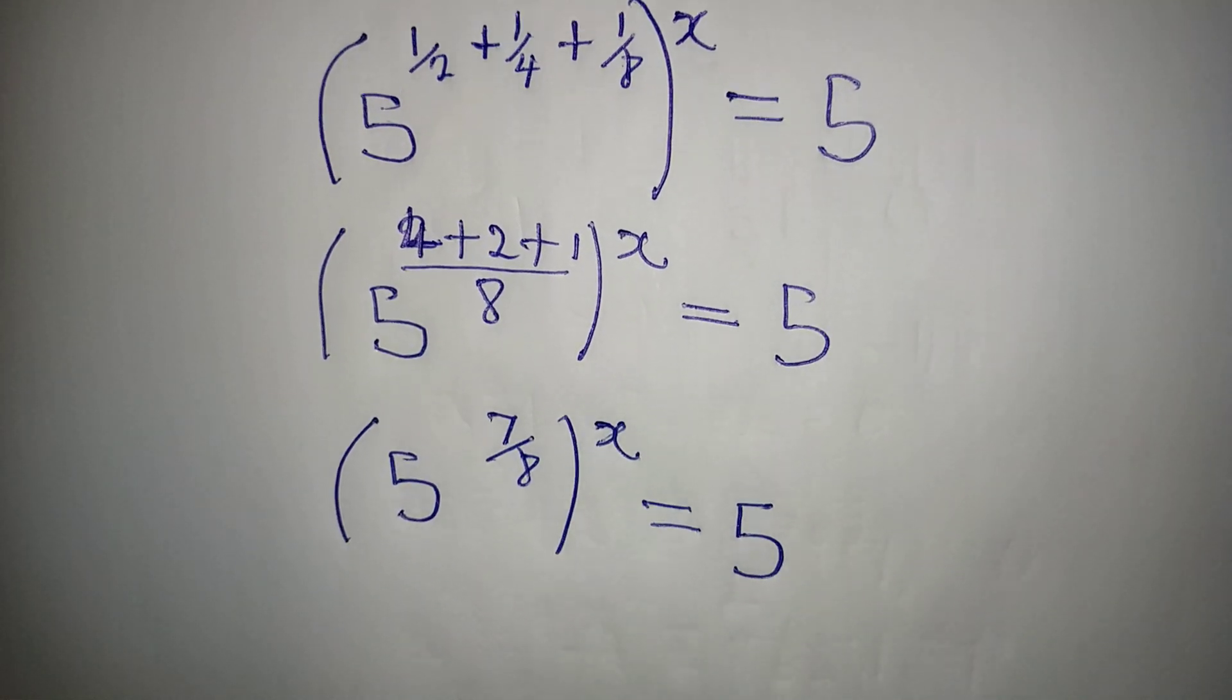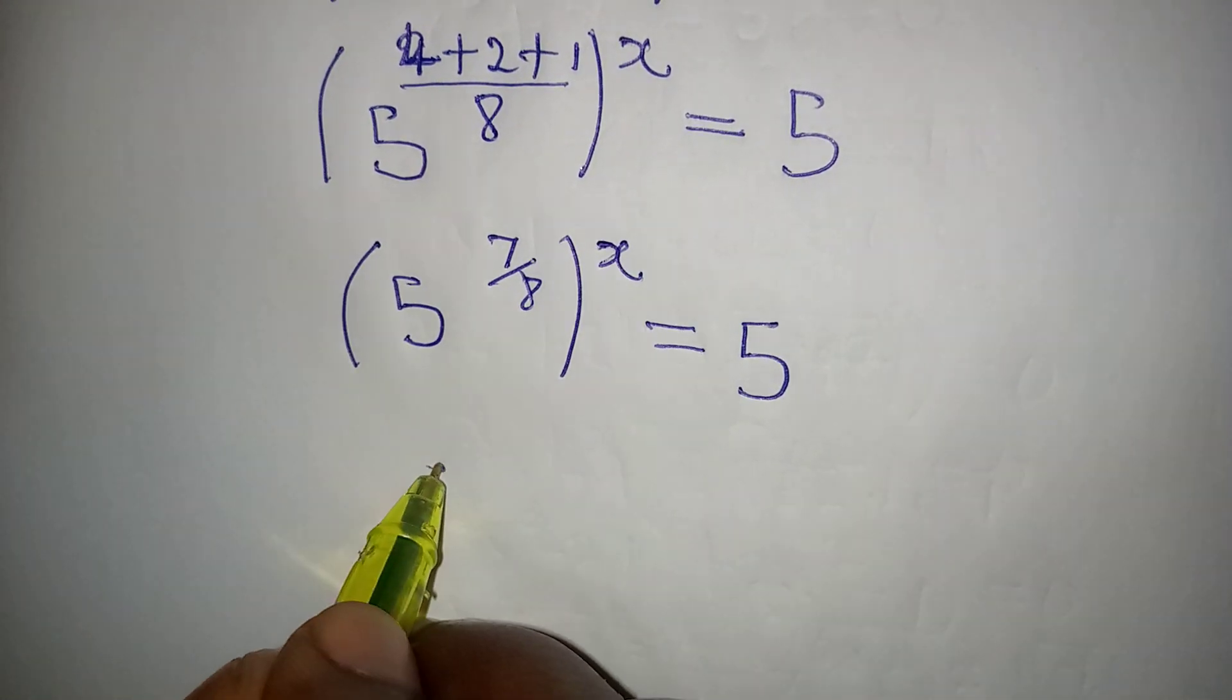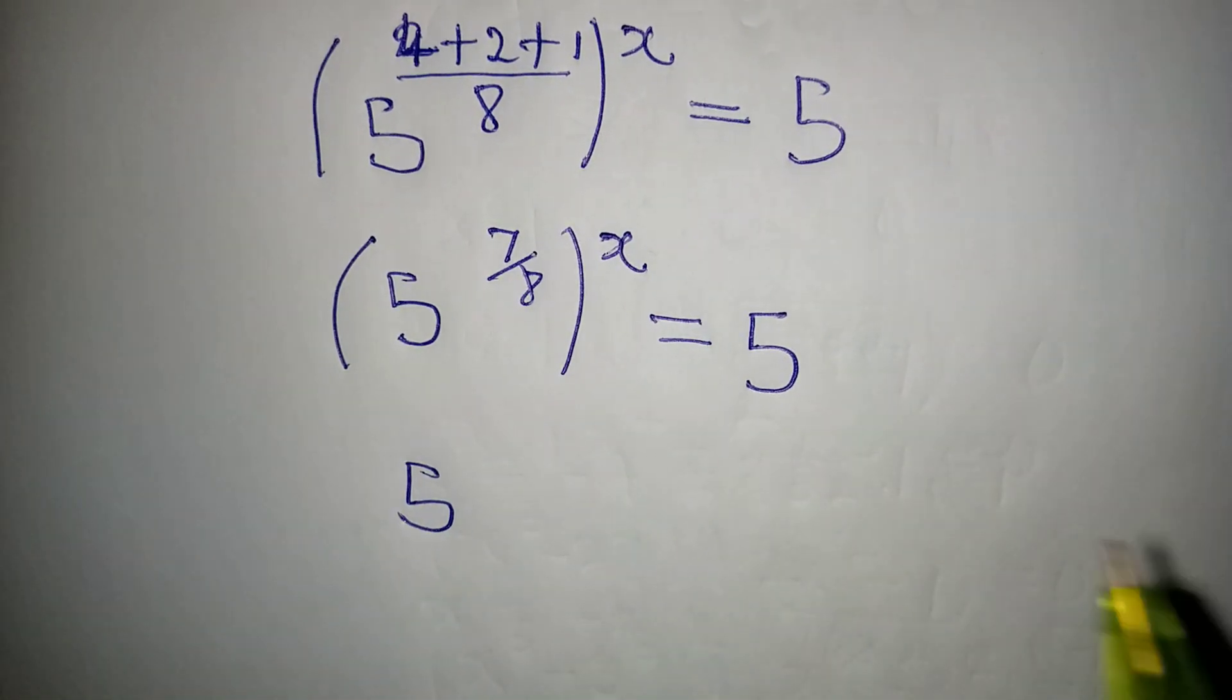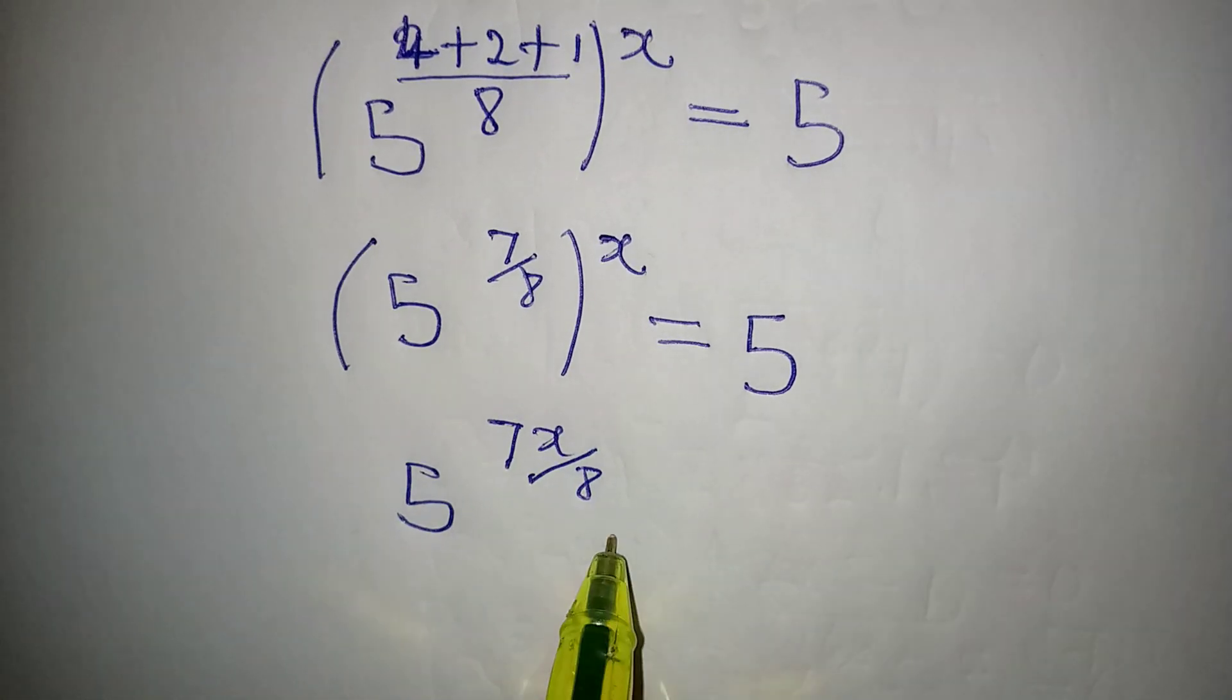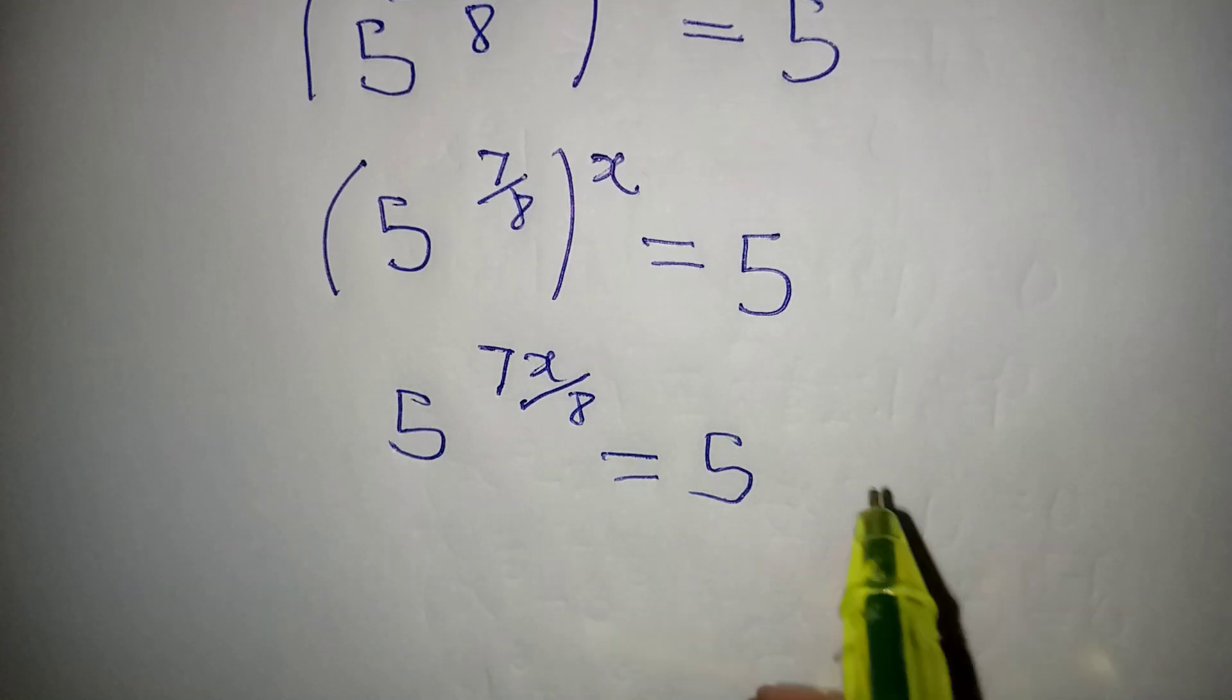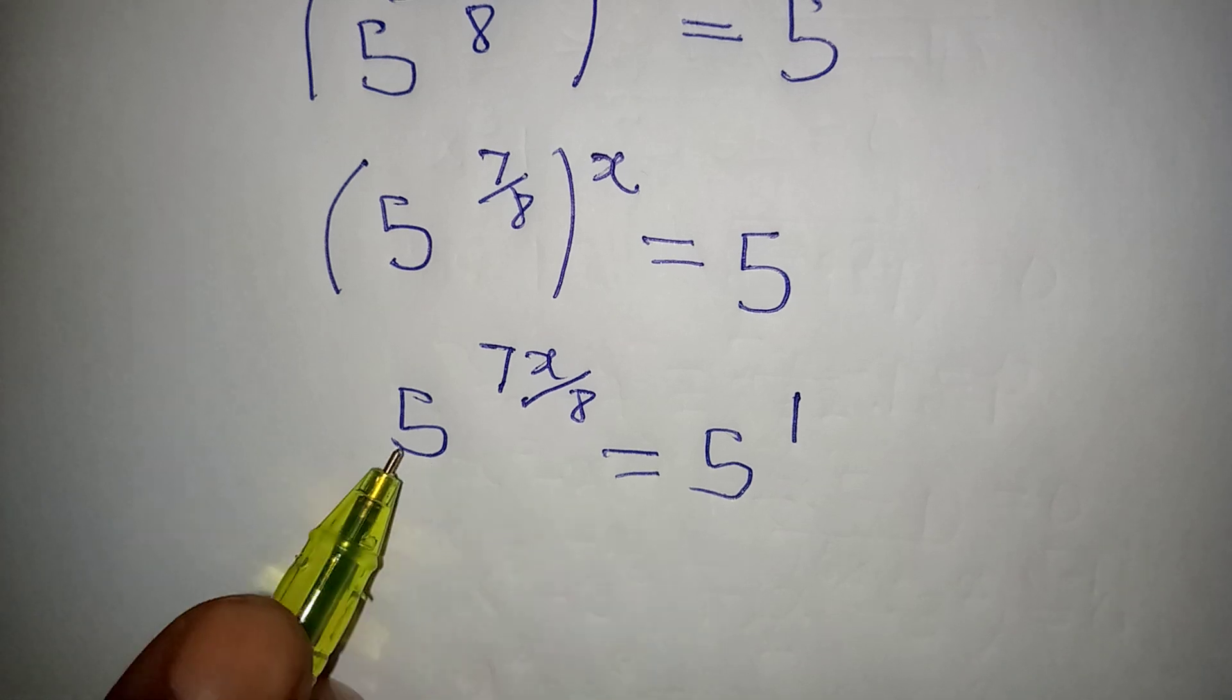Okay, so if this is the case we normally open the bracket here. So we have 5 to open the bracket, the two powers will multiply, so we have 7x over 8 and this is equal to 5. But mind you, 5 is the same as 5 to the power of 1. Now we have the same bases and if the bases are the same we will equate the powers.